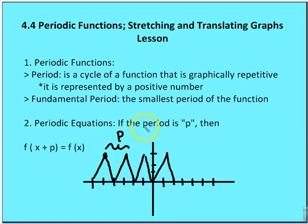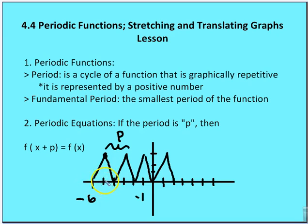For periodic equations, if the period is p, then f of x plus p equals f of x. For example, looking at the graph: at x equals negative 6 the value of y is 0, at negative 5 the value is 1, and at negative 5 y is 3 — so negative 5, 3 is the first peak.